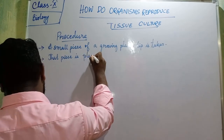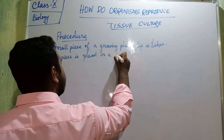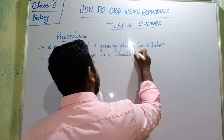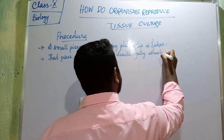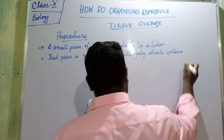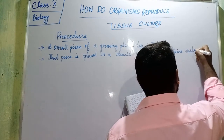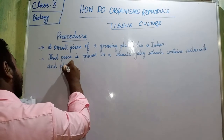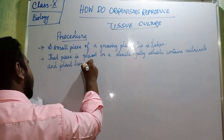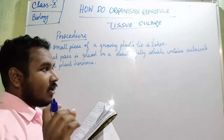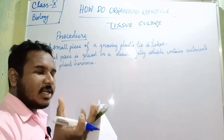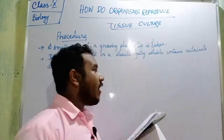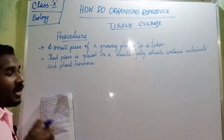Second step: that piece is placed on a sterile jelly which contains nutrients and plant hormones. The tip is transferred into a basin or a dish containing a jelly that has nutrients and plant hormones. Different plant hormones are present there.